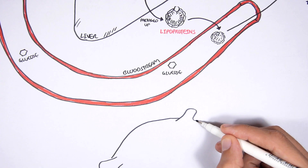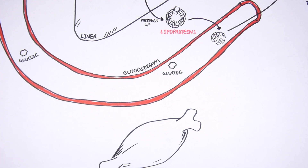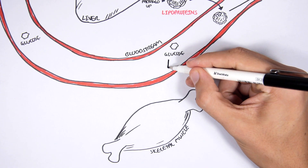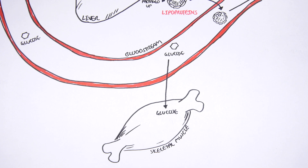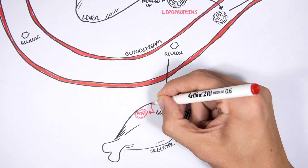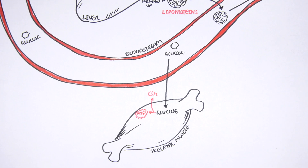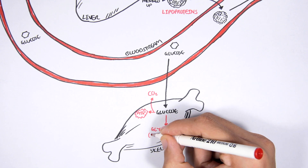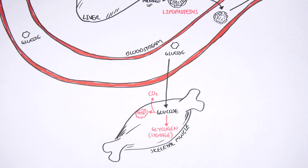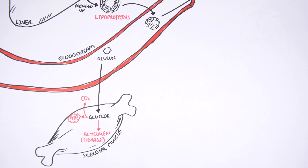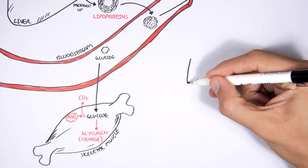Glucose can also be taken up by skeletal muscles, where it can be used as energy to produce ATP — with carbon dioxide as waste — and skeletal muscles can also store glucose as glycogen, just like the liver.